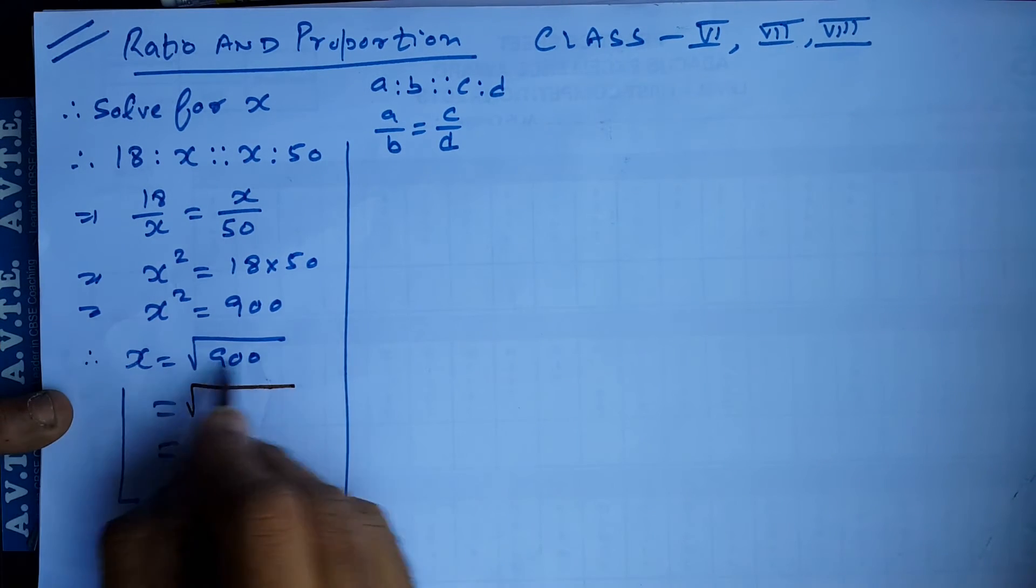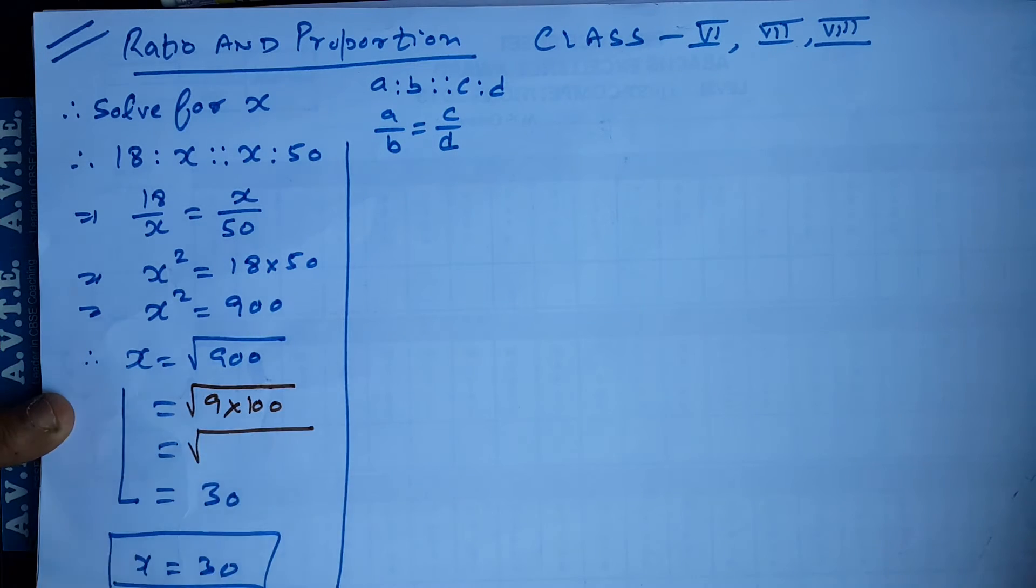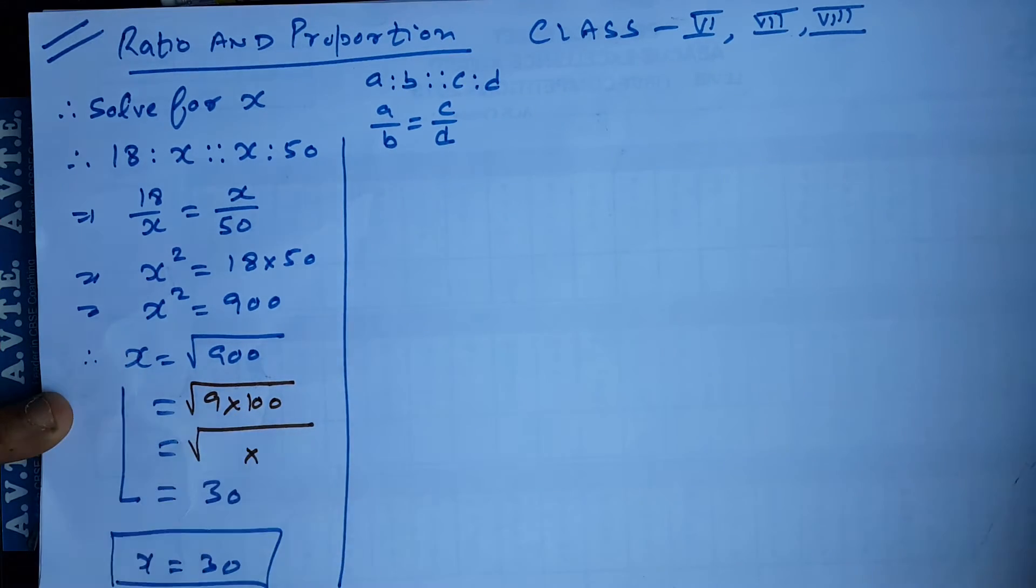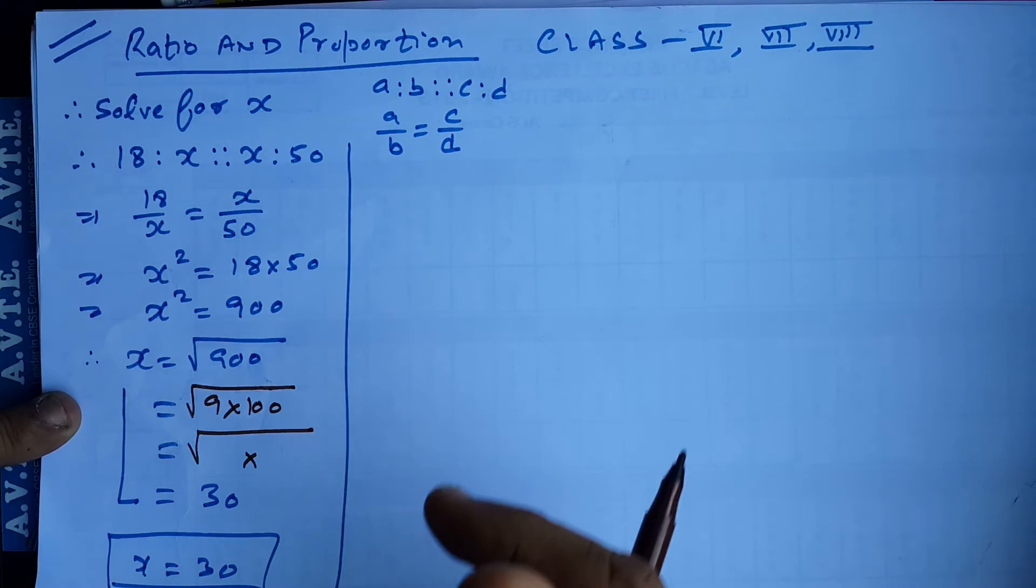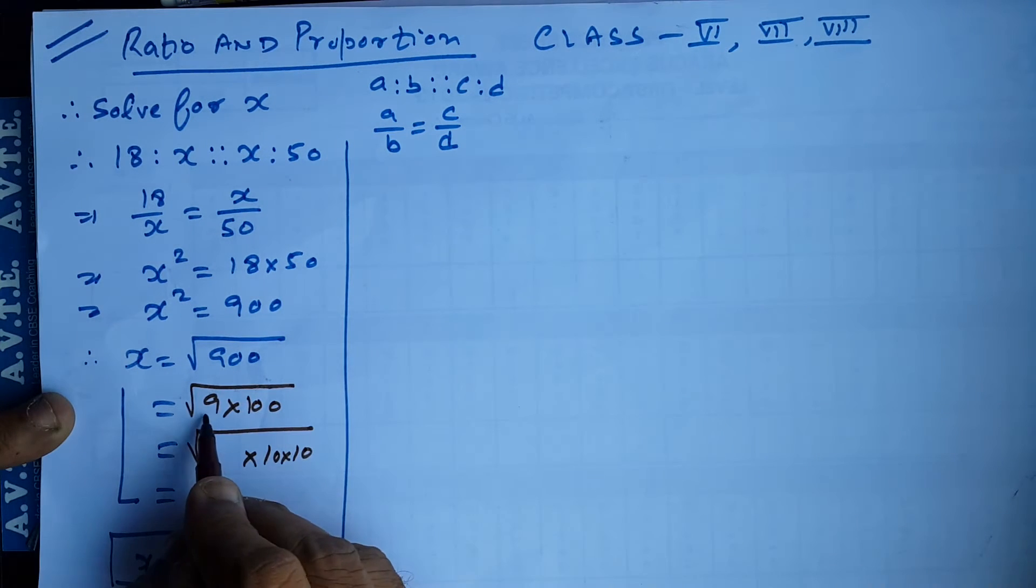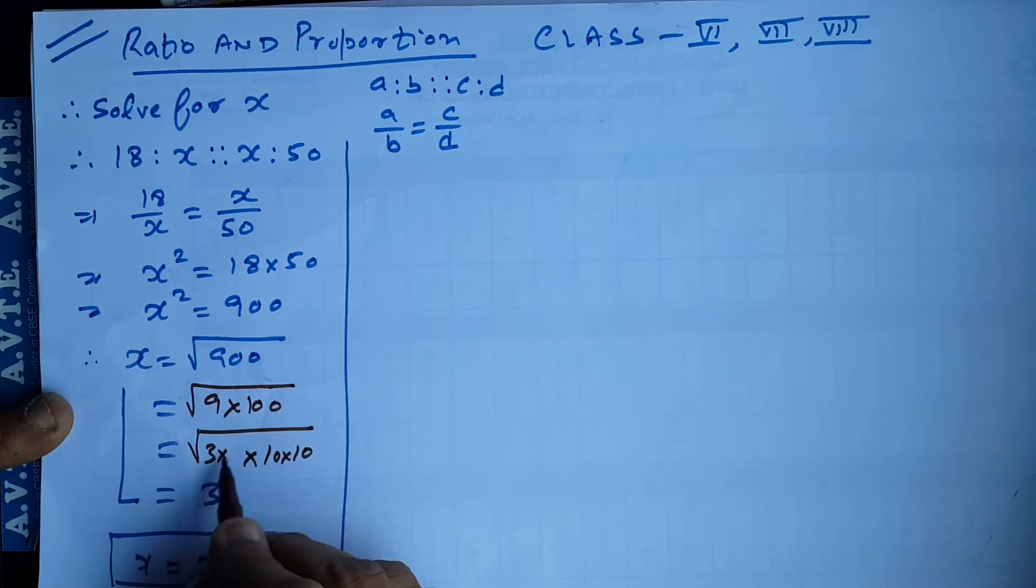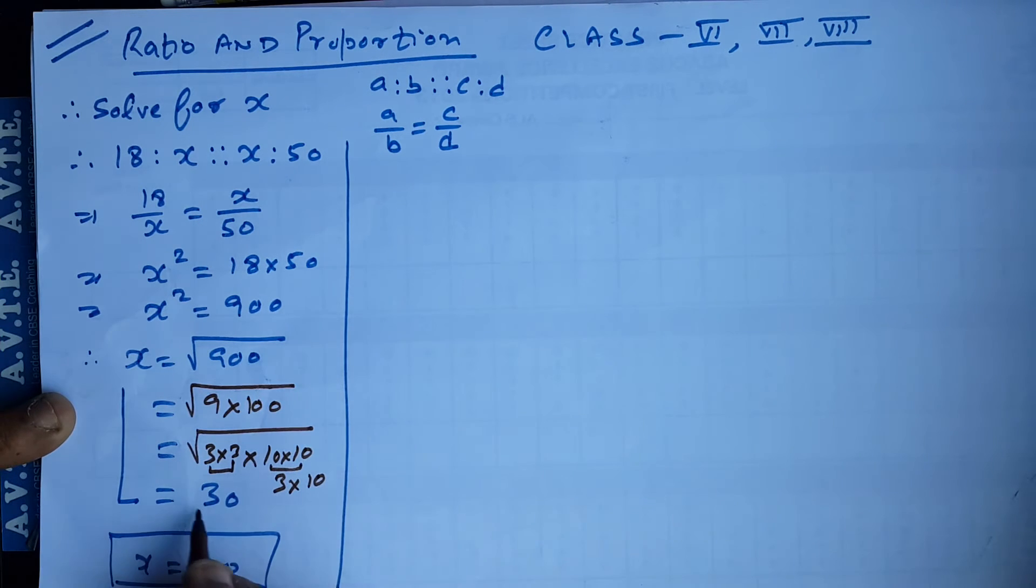So this 900 is 9 into 100 and you tell 100 ke factor banauo ge, which two same numbers is multiplying and get the answer. So this is 100 is 10 into 10. Same for 9. This is 3 into 3. So from this one pair, you take 3 common. This one pair, you take 10 common. The answer is what? 30.